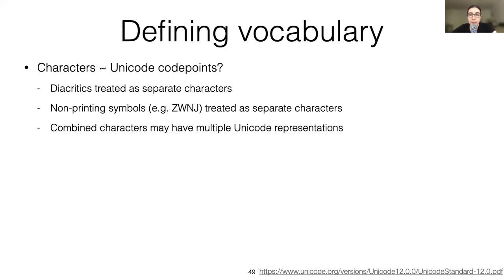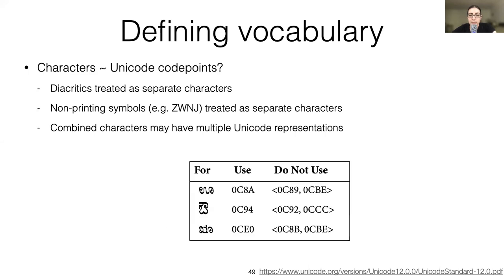Another problem is that there's more than one way to represent some characters. For example, a table from the Unicode standard documentation shows that you can get a visually identical result by either using a single character or by combining two parts. The takeaway here is that linguistic typology matters in more ways than you would expect, even for seemingly technical aspects of our work.